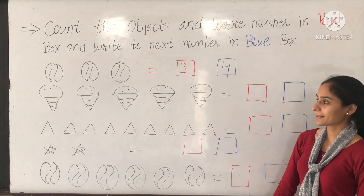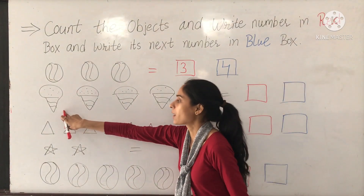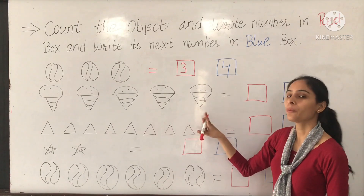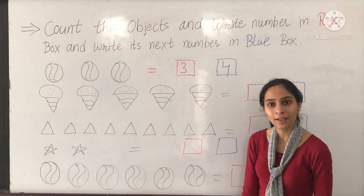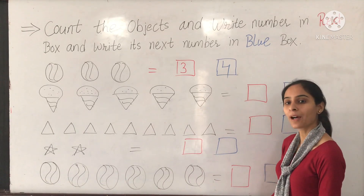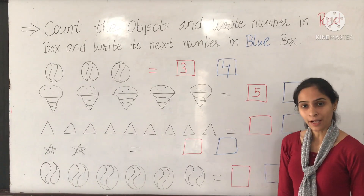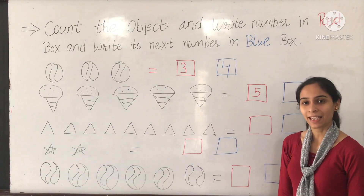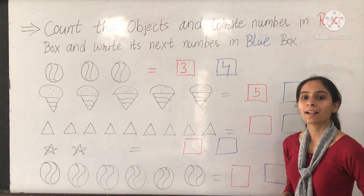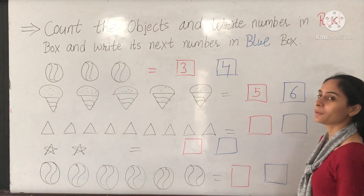Next, count the objects. Let us start: 1, 2, 3, 4, 5. How many ice cream? 5. So in the red box we can write 5. What comes after 5? 6. So we can write 6 in the blue box. Very nice.